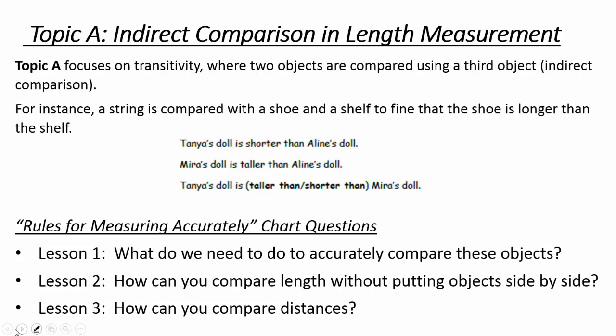Topic A really focuses on indirect comparison, as opposed to putting two things next to each other. You're going to use a third object, which is really transitivity in math — if I know four is bigger than two and two is bigger than one, four must be bigger than one. The module asks you to help develop an anchor chart to go through the rules of what measuring is, with each lesson offering an opportunity to ask a question and create answers. This would make a great closure to every lesson.